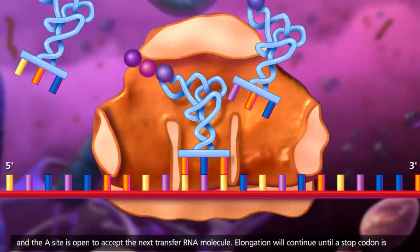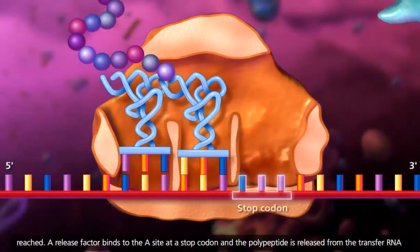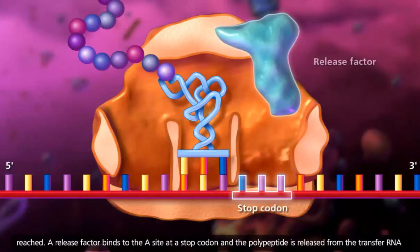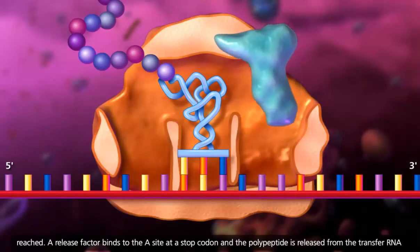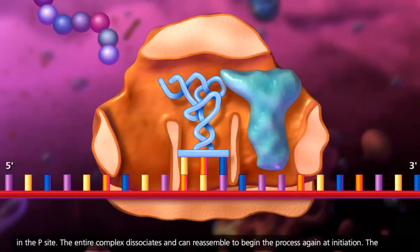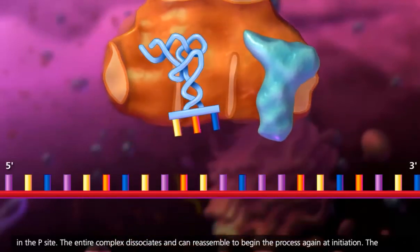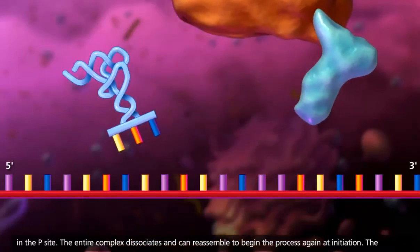Elongation will continue until a stop codon is reached. A release factor binds to the A site at a stop codon, and the polypeptide is released from the transfer RNA in the P site. The entire complex dissociates and can reassemble to begin the process again at initiation.